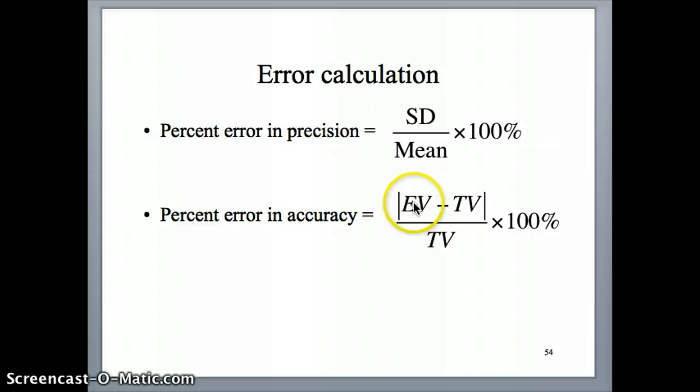So if you have an average value, you would use that as your experimental average minus your true value. And take that as an absolute value, just the positive number of it, and then divide it by the true value times a hundred percent. That gives you how far off you are from the true value.